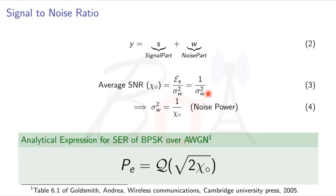Now, we can also represent the noise power in terms of SNR. This is required for simulation. So noise power in terms of SNR is given as 1 divided by chi naught, means 1 divided by average SNR.